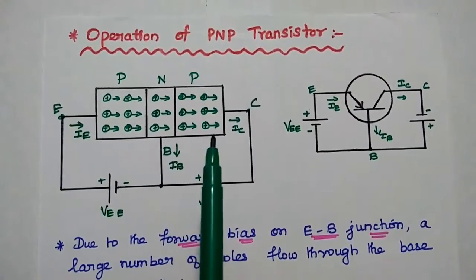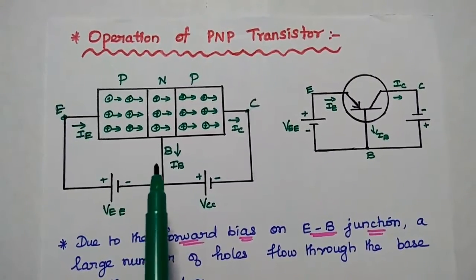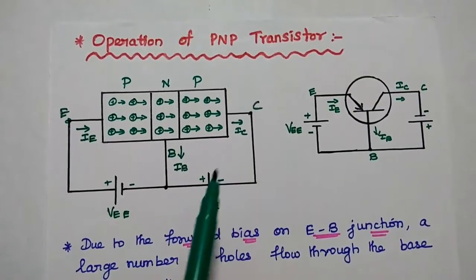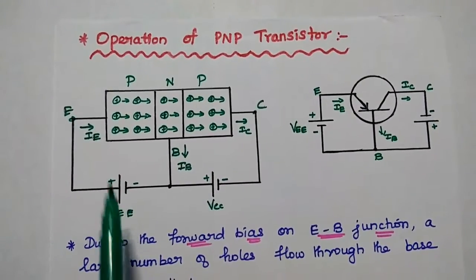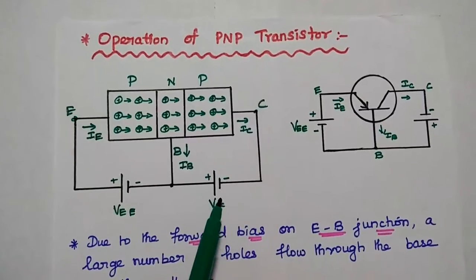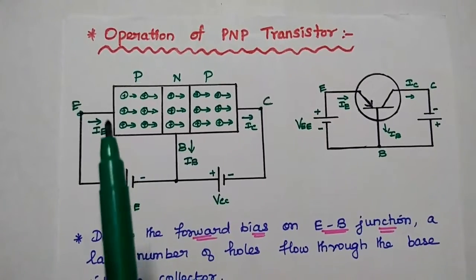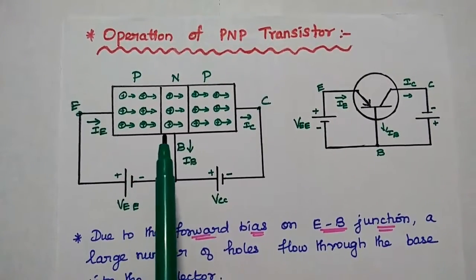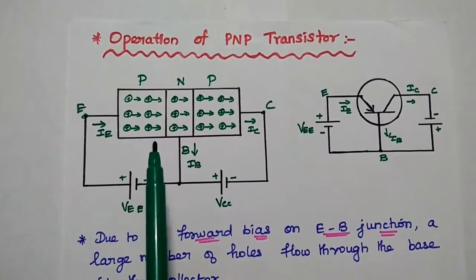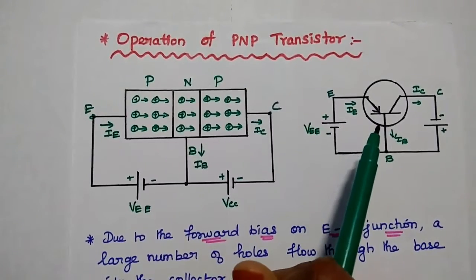Next, we are going to discuss the operation of PNP transistor. In this PNP transistor, the majority carriers are holes and minority carriers are electrons. The emitter-base junction is forward biased and the collector-base junction is reverse biased. Forward biased means positive to positive, negative to negative. Reverse biased means negative to positive, positive to negative. Due to this forward bias, a large number of holes are injected to the collector side through the base region, constituting emitter current.